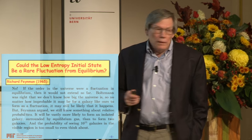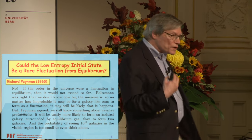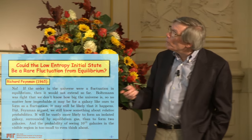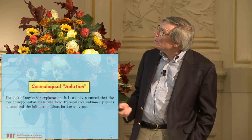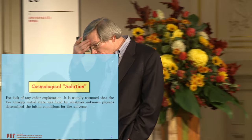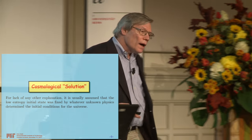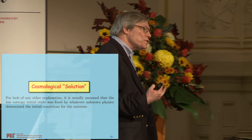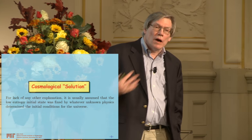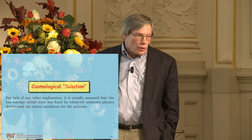So treating the low entropy state as just a thermal fluctuation does not seem to work. The usual answer is that the low entropy initial state must come from cosmology — that somehow it must just be a feature of the way the universe started. And since we don't really know how the universe started, that's something you can always say.